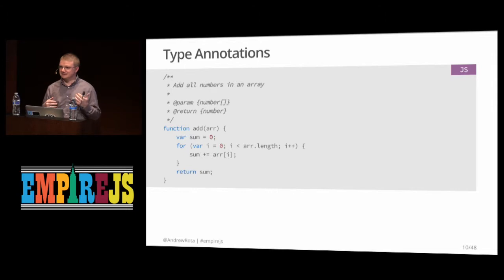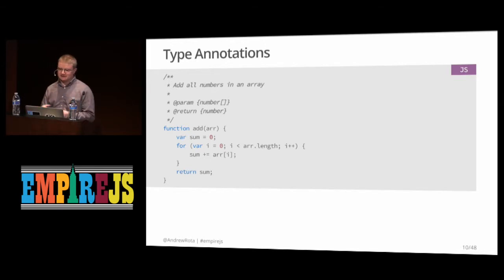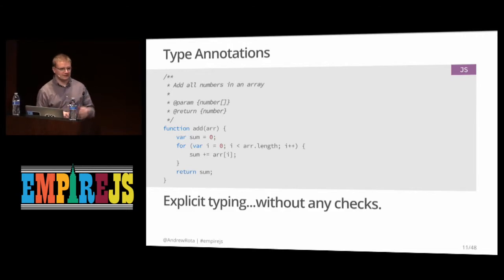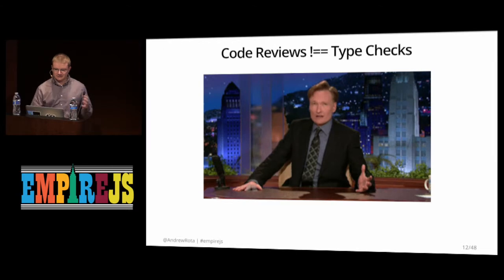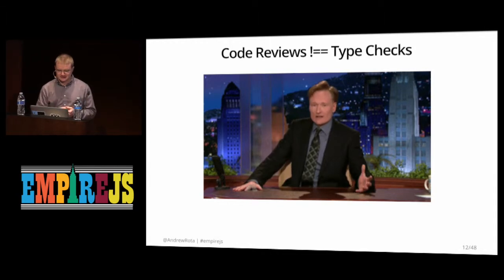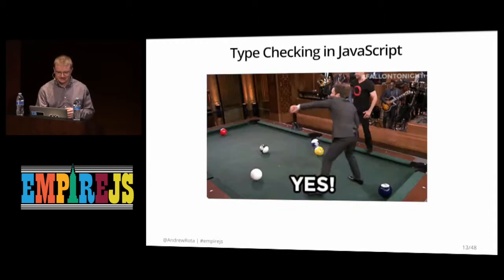What might be the next possibility? Maybe you put comments into your code. How many of you use JSDoc? JSDoc is a very common approach to comment your code in a way that's not only human readable but machine readable — some IDEs are smart enough to figure this out. We can specify that a param should be an array of numbers and the return value should be a number. But nothing is enforced — code reviews are not type checks, and pointing out obvious function misuse in code reviews is just wasting time.